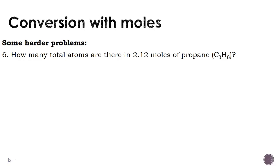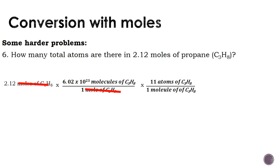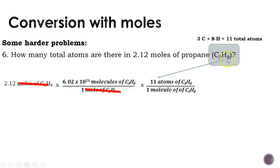The last problem asks: how many total atoms are there in 2.12 moles of propane? We start with 2.12 moles because that's given in the problem. First we convert moles of propane into molecules of propane by canceling out moles. Now our answer is in molecules. We want total atoms, so we need to know the difference between molecules and atoms. There's a conversion factor: for every 1 molecule of propane, there are 11 total atoms — 3 carbons plus 8 hydrogens equals 11 atoms.